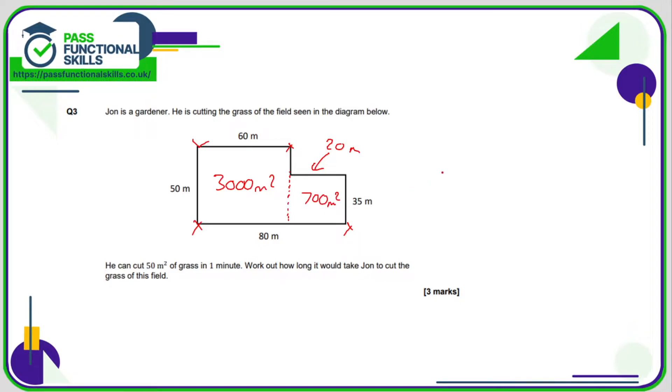So the total area of the garden is 3700 square meters. And if he can do 50 per minute, well, how many 50s are there in 3700? The calculation is therefore 3700 divided by 50, and that comes to a total of 74 minutes.